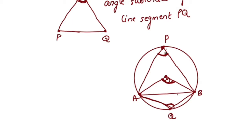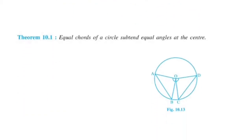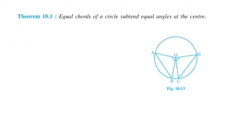This is the important theorem: Equal chords of a circle subtend equal angles at the center. This is the angle subtended by the chords AB and CD.